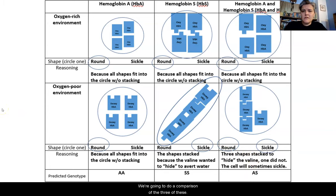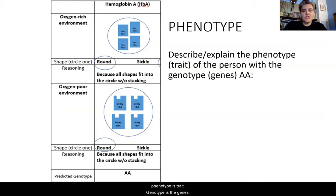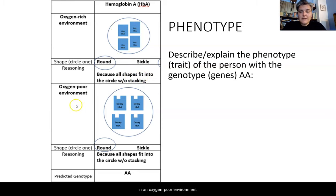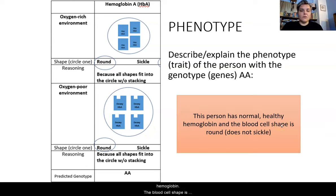Looking at the phenotype — phenotype means trait, genotype means genes. The genotype AA, meaning two hemoglobin As, shows a round cell shape in an oxygen-rich environment because the subunits fit together within the cell without stacking. In an oxygen-poor environment, the cell is also round for the same reason. This individual has normal, healthy hemoglobin — the blood cell shape is round and does not sickle.